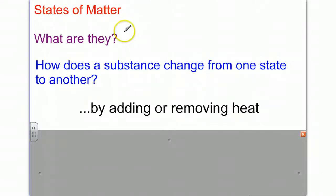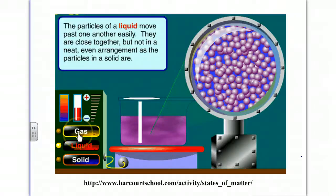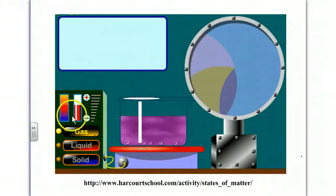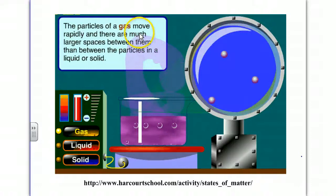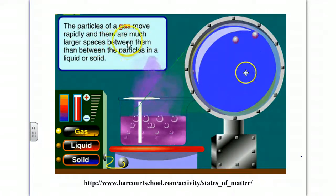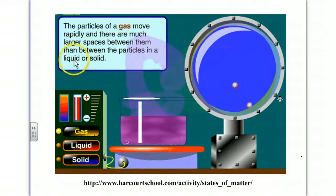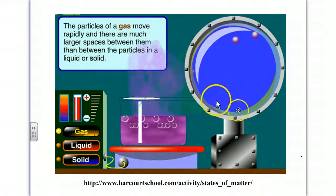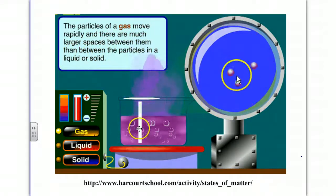States of matter, such as solids, liquids, and gases: these substances change from one state to another by adding or removing heat. In this example, we have a gas where there's a lot of space between the particles. They're moving around rapidly, randomly, and constantly.